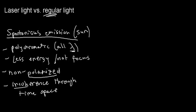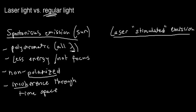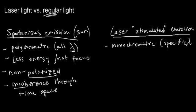So those are the four characteristics of spontaneous emission. When we're talking about laser light, the idea behind it is stimulated emission. You can take all the characteristics on the spontaneous emission side and flip them over. Instead of polychromatic, what we're looking for is monochromatic — meaning a specific wavelength. Also, when we're talking about energy, it's highly focused and energetic.